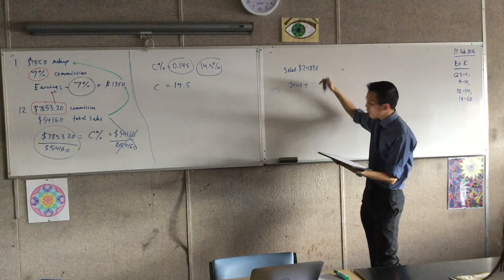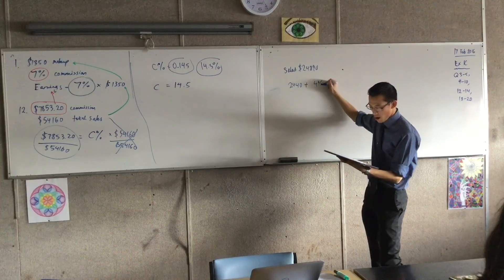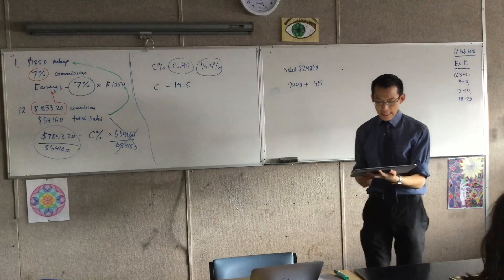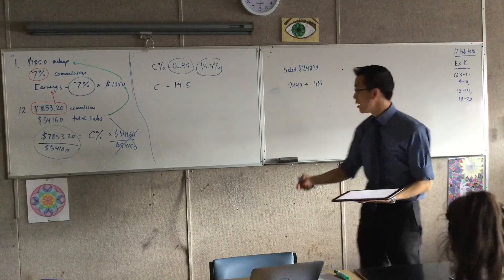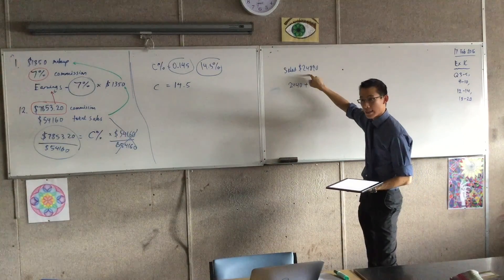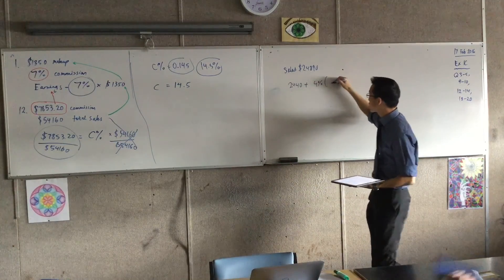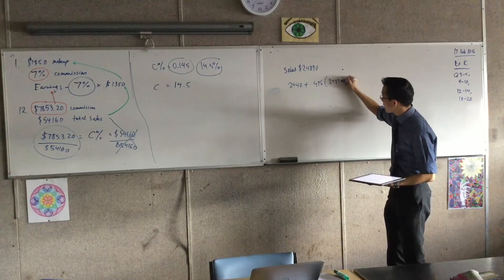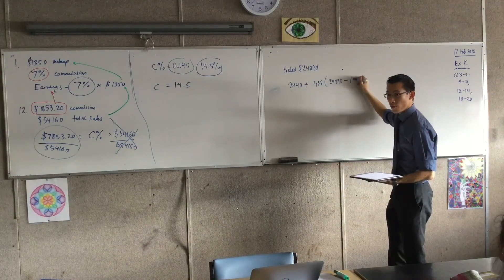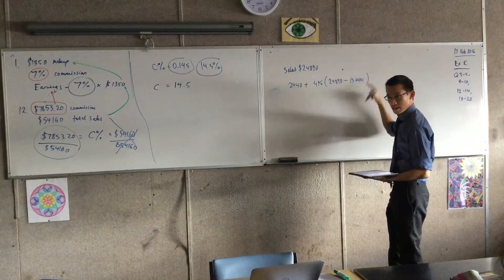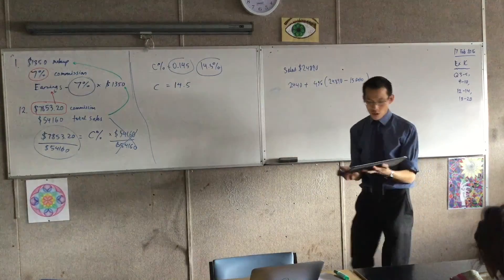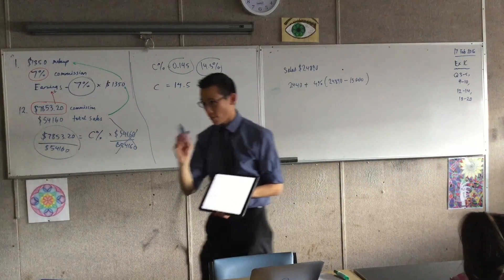Now watch this. It says sales over 15,000. How much has he sold over 15,000? And the answer is 24,890 take away 15,000, right? So that's a different thing. You've got that table, you have to read it very carefully.